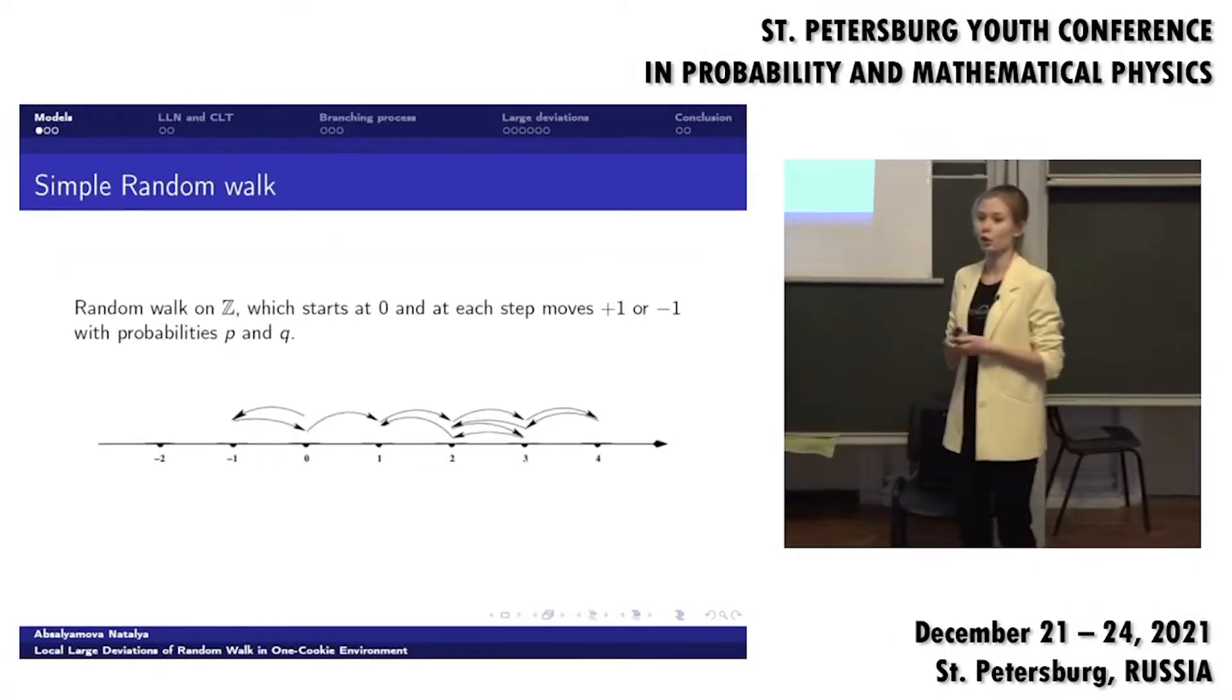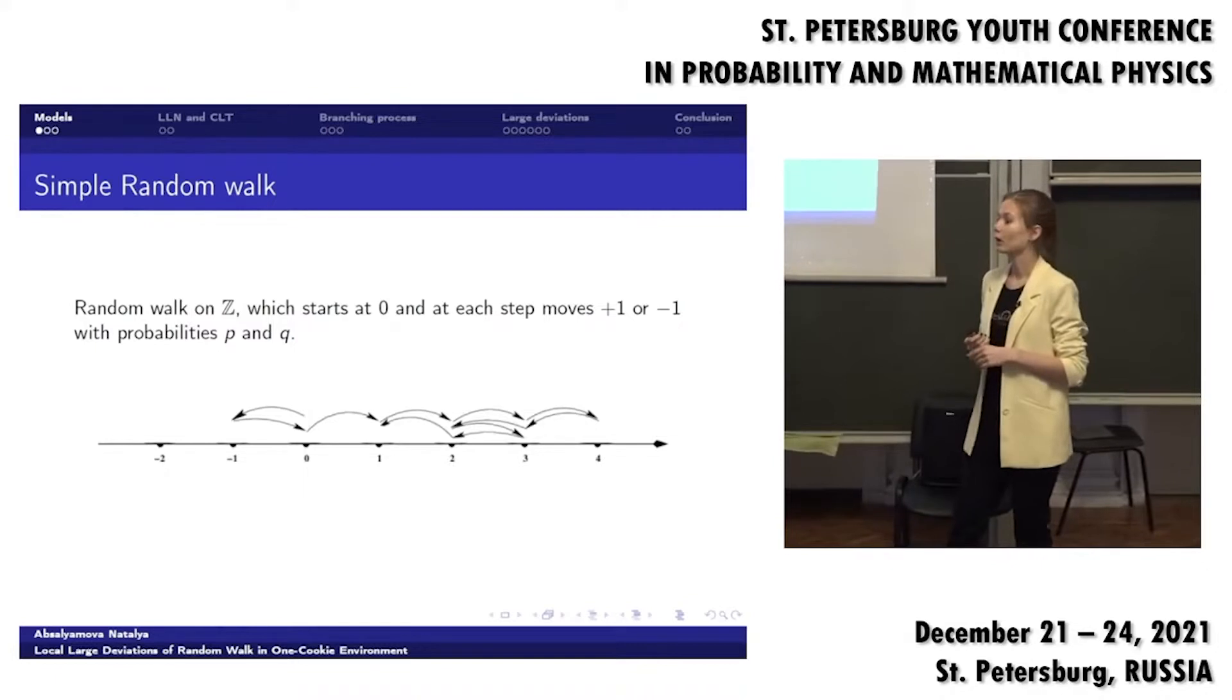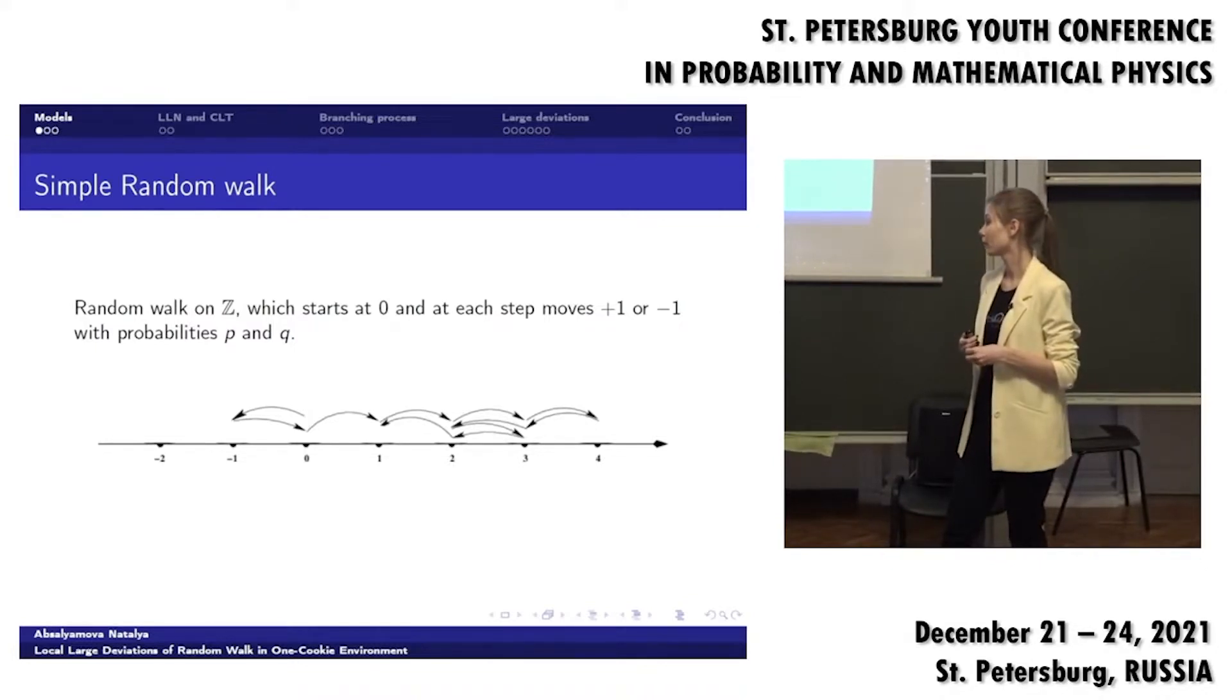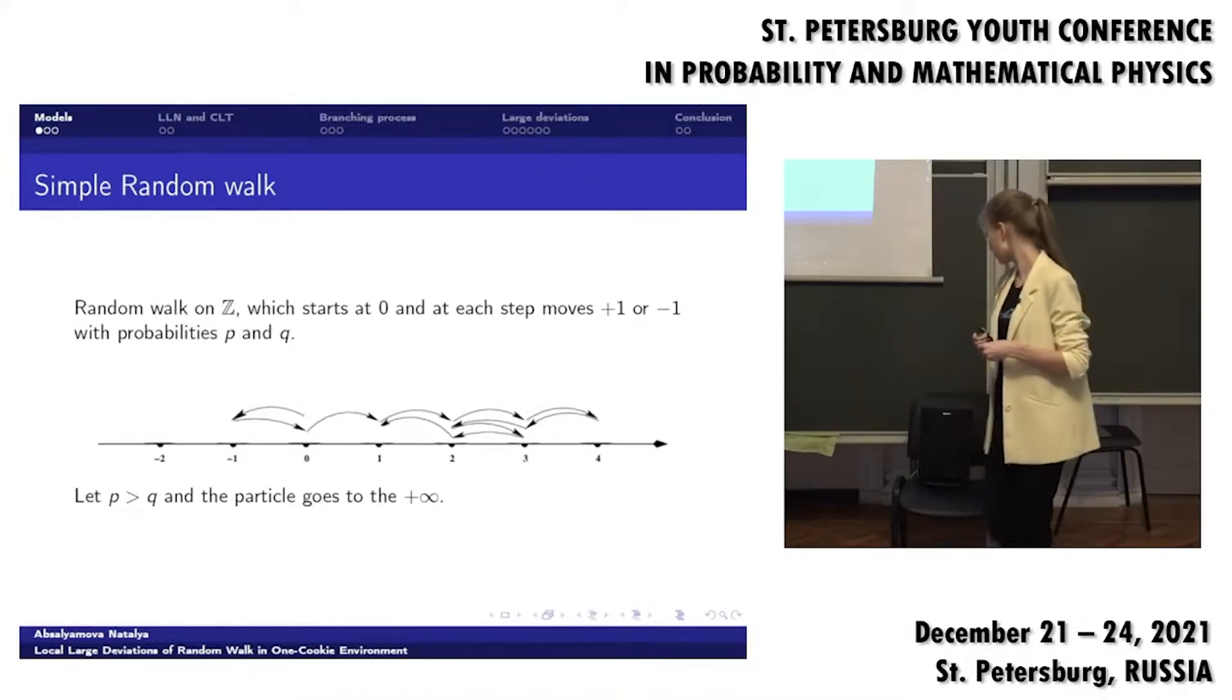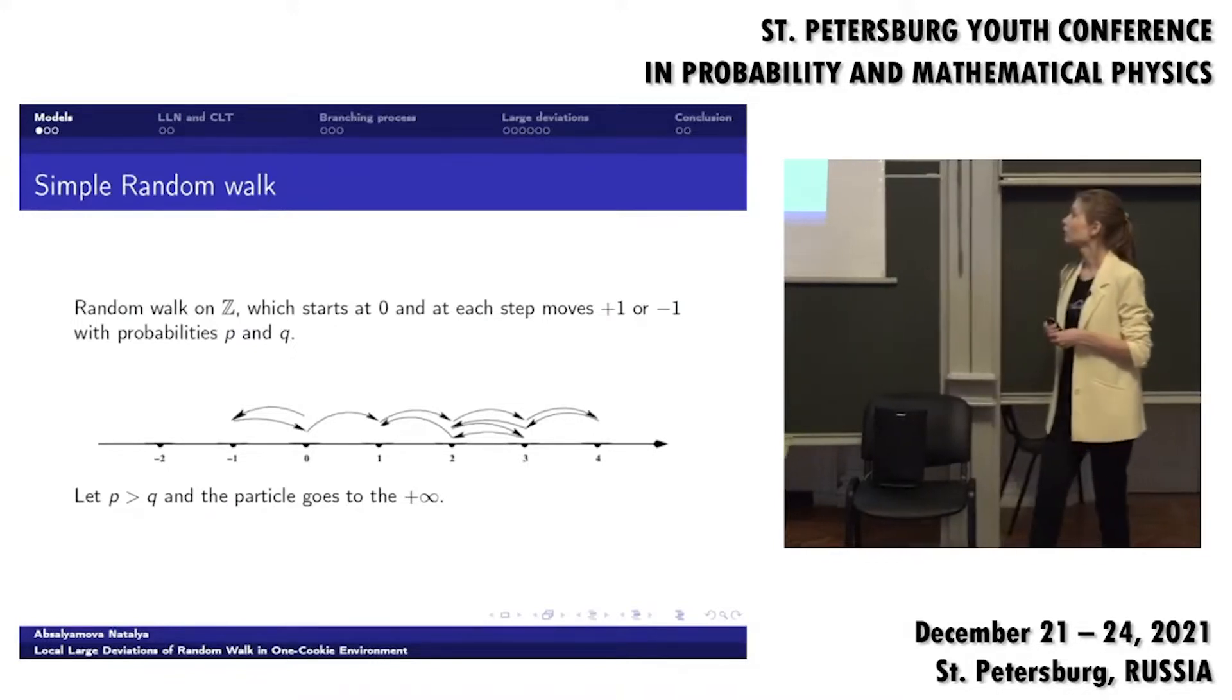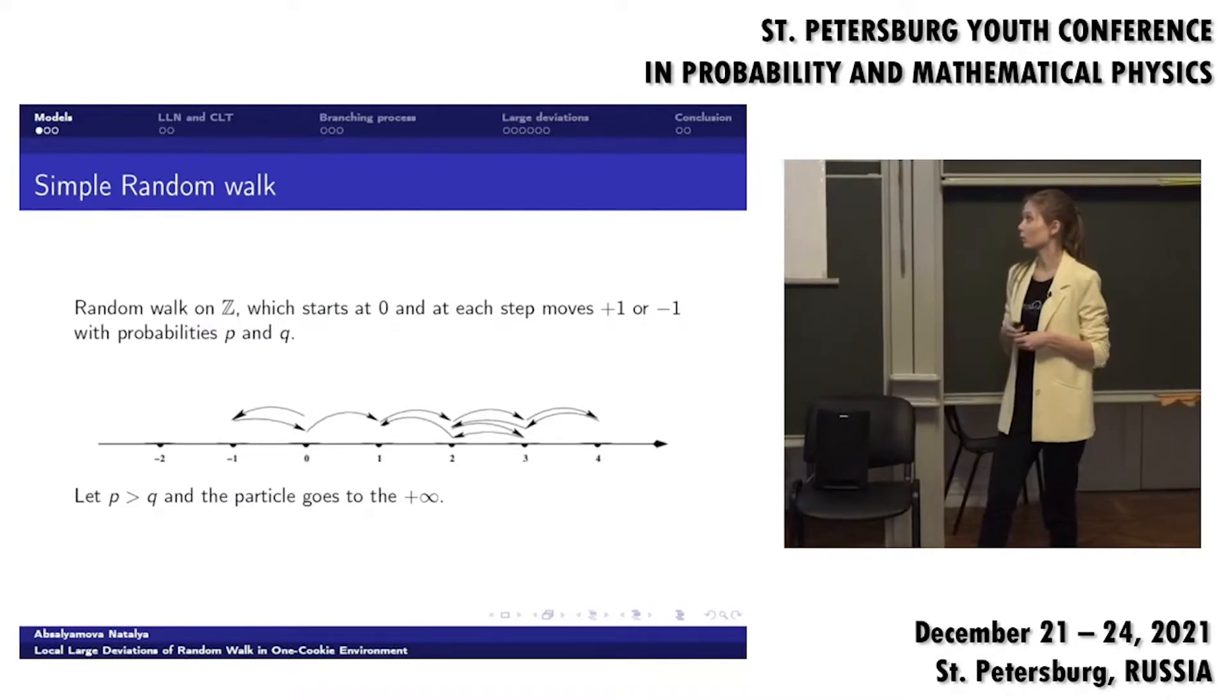Let's start with just simple random walk. We have a line and our particle starts from zero and goes to the left or to the right with probabilities p and q. In my walk, let's suppose that p is greater than q and the particle goes to plus infinity when time tends to infinity.